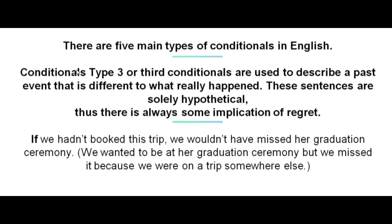There are five main types of conditionals in English, and amongst them are conditionals type 3, or third conditionals. Third conditionals are used to describe a past event that is different to what really happened. Note that these sentences are solely hypothetical — thus there's always some implication of regret.